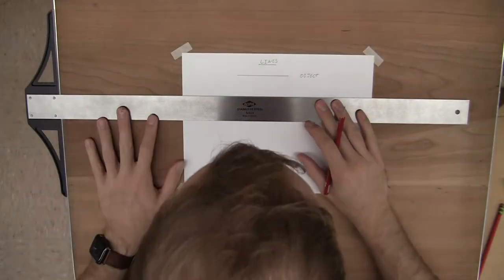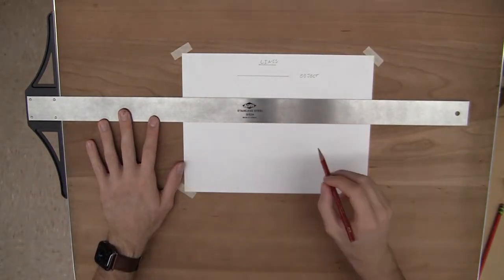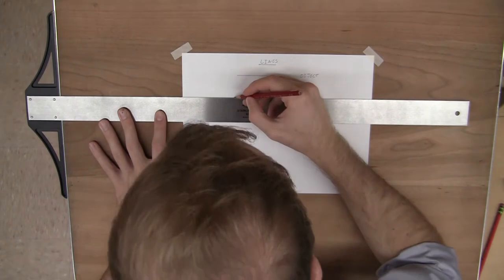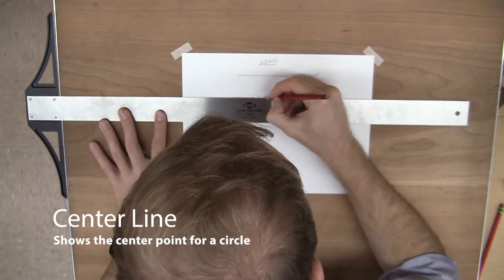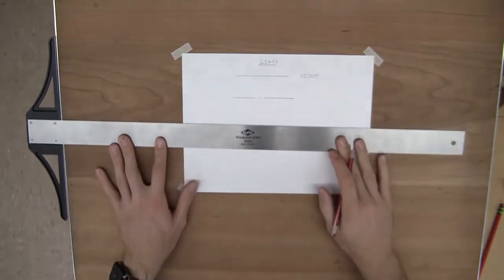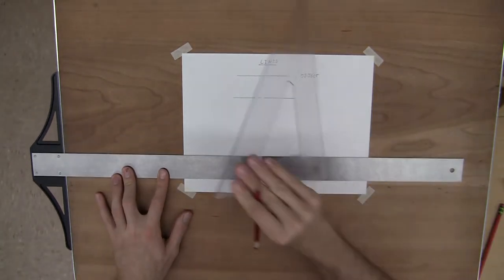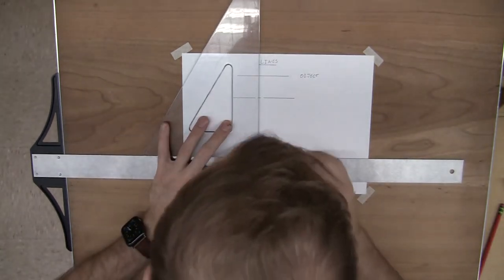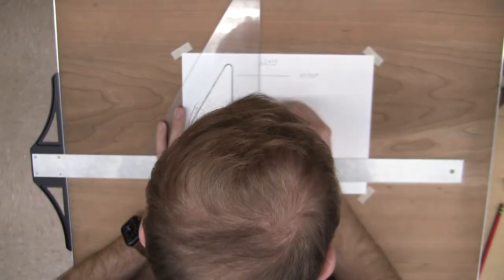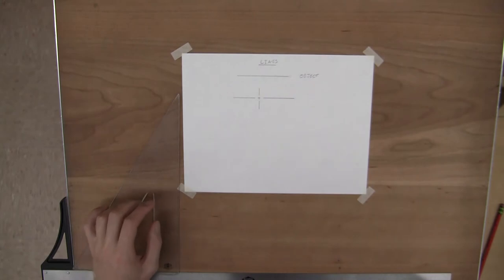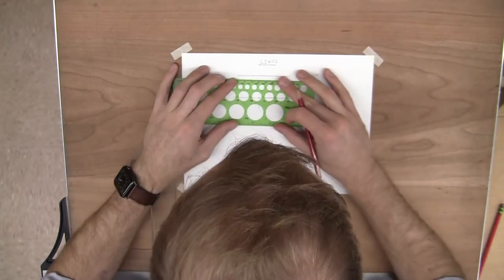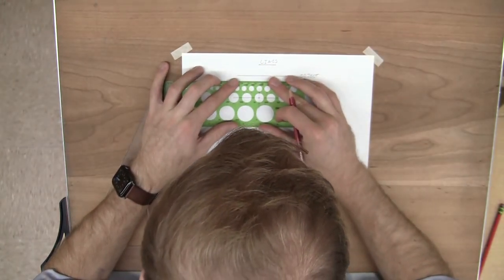The second type of line you've been using, whenever we've been using our compass, this is a center line. I'm going to draw two center lines just to really show it. So this is a center line, I'll draw a circle over it as well.